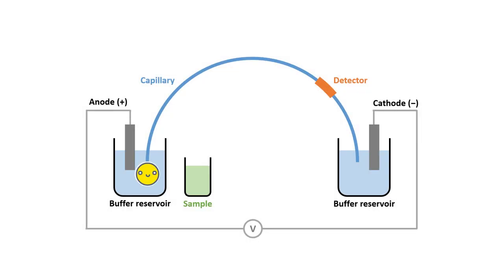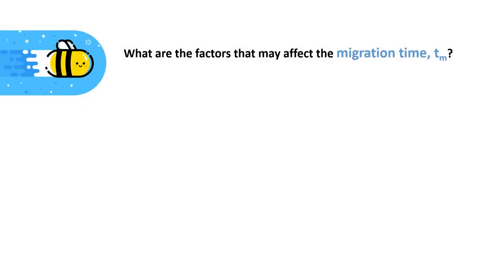Now that we know how to calculate the migration rate, are there any other factors that may affect the migration time that will allow us to make capillary electrophoresis even more efficient? Let's pause this video for one minute, take a pen and a piece of paper, and try listing down some possible factors that you think may affect the migration time of a solute in capillary electrophoresis. Two factors that may affect the migration time are the length of the capillary and the voltage applied. The shorter the capillary, the shorter the migration time. The greater the voltage applied, the shorter the migration time.